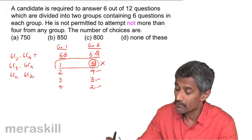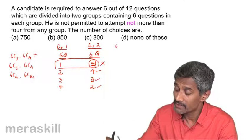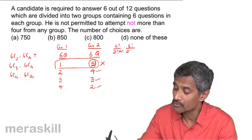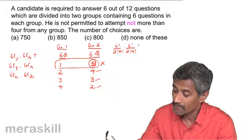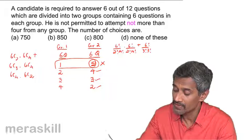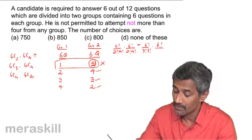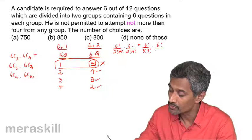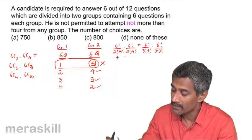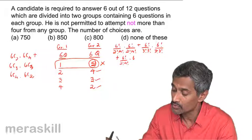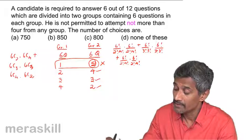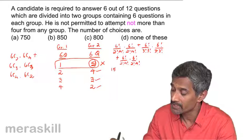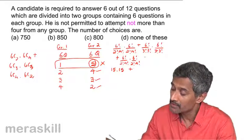Calculating: 6! / (2! × 4!) × 6! / (2! × 4!) gives 15 × 15 = 225. Then 6! / (3! × 3!) × 6! / (3! × 3!) gives 20 × 20 = 400. And 6! / (4! × 2!) × 6! / (4! × 2!) gives 15 × 15 = 225.